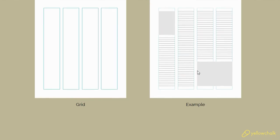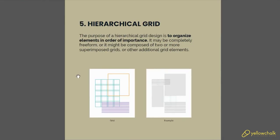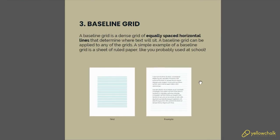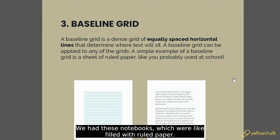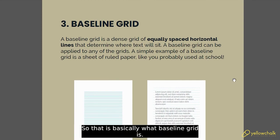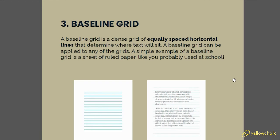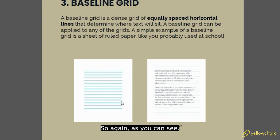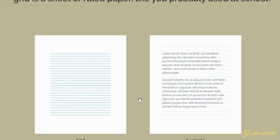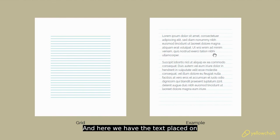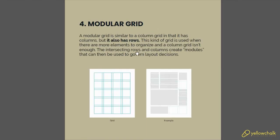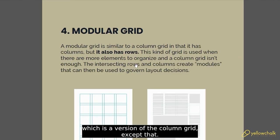Then we have the baseline grid, which is like the ruled paper notebooks we had back in school. It gives guidelines for you to place text on. As you can see, the blue lines are the lines on which the text can be placed, and here we have the text placed on those lines.